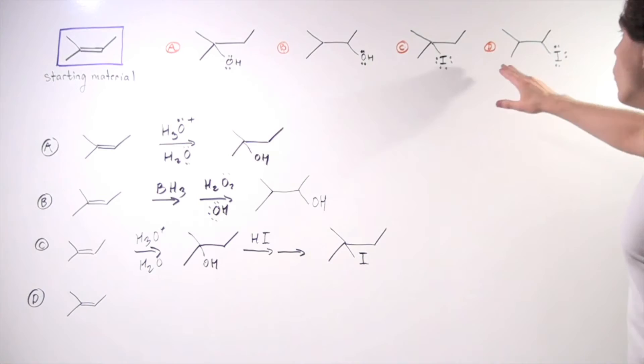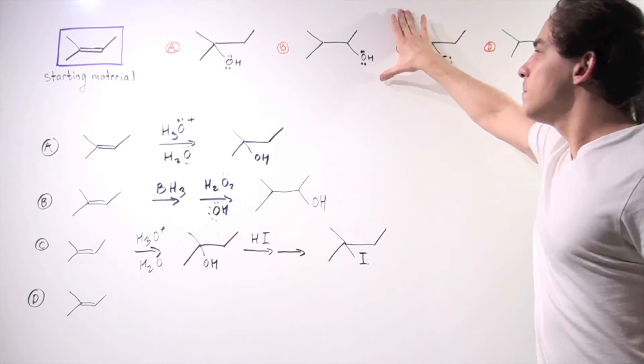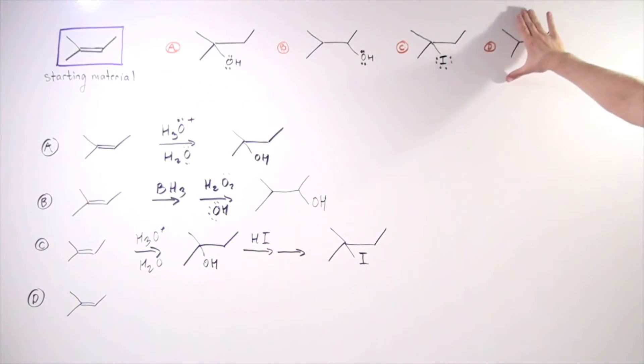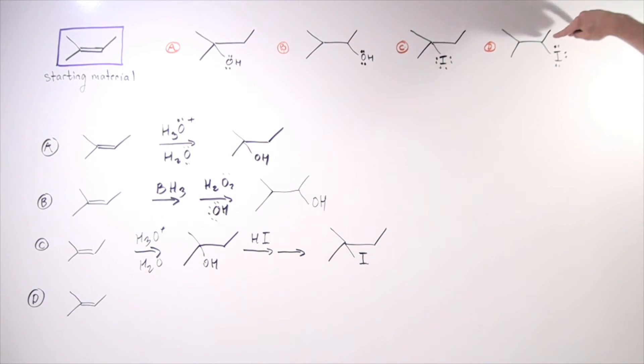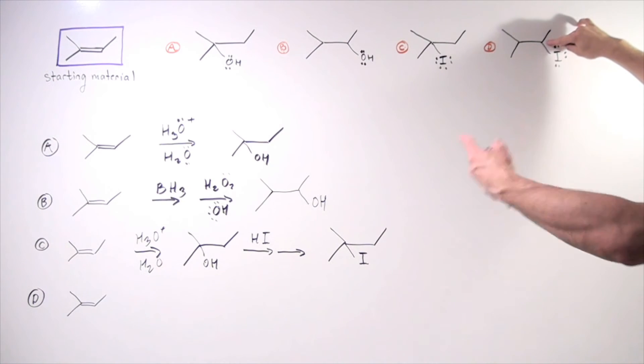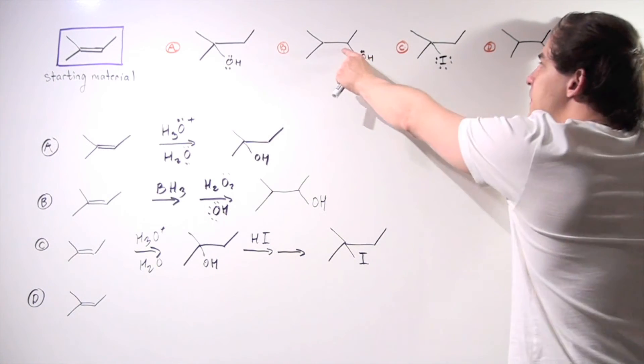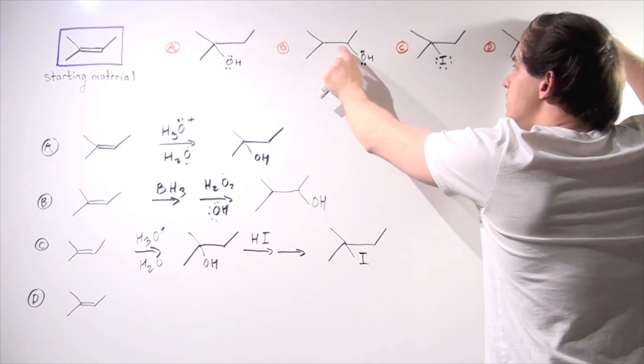Now, in the same way that we examine C and compare it to A, let's examine D and compare it to B. Notice we want our iodide to be attached to this carbon, which is also the same carbon that this hydroxide in part B is attached.